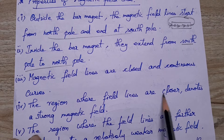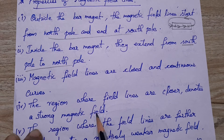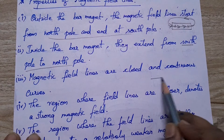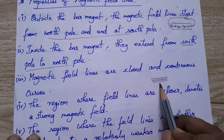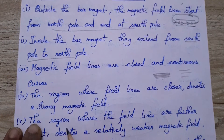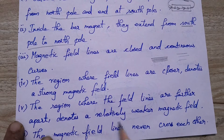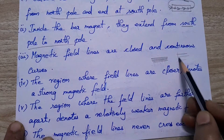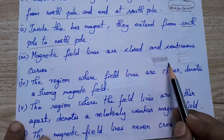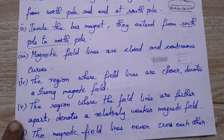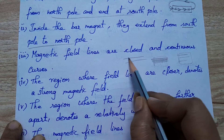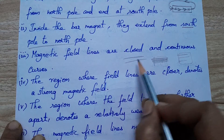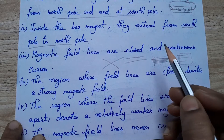The region where field lines are closer together denotes a stronger magnetic field. If field lines are farther apart, it denotes a relatively weaker magnetic field. The magnetic field lines never cross each other — they move parallel to each other.